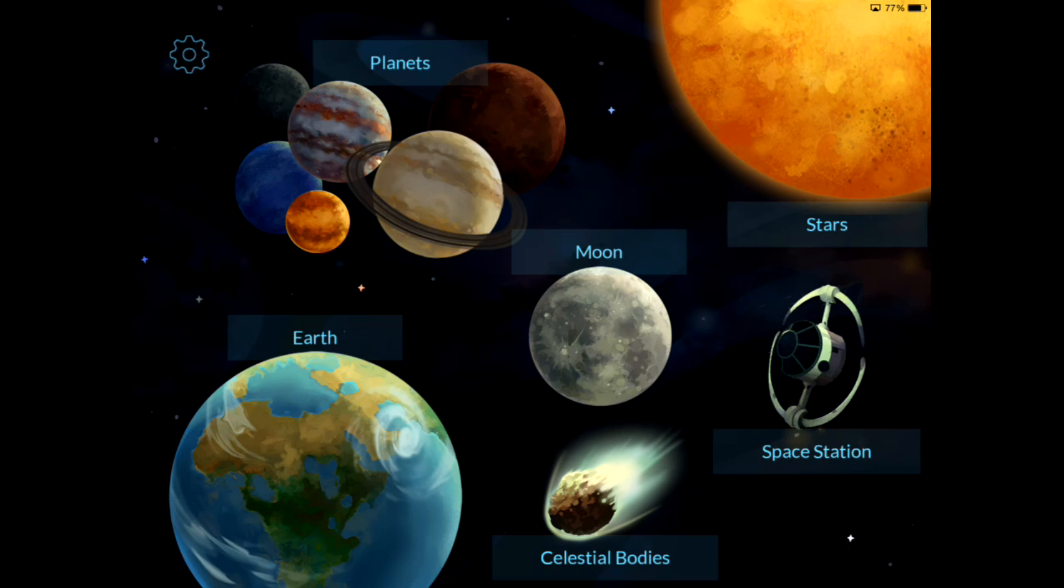Celestial bodies, the sun, the space station, Earth, moon, etc. Again, Arloon Solar System is available to download from the App Store for only $1.99, which is a perfect price. It's universally compatible with iPhone and iPad.